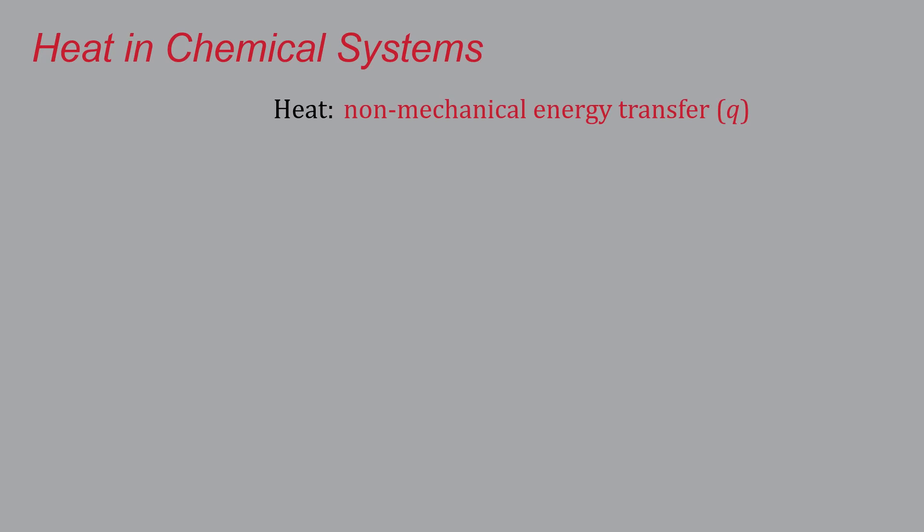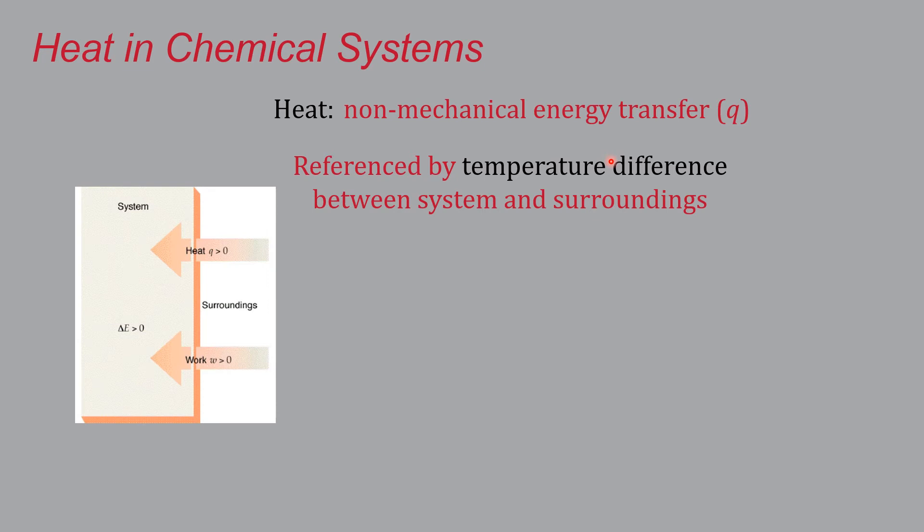So heat in chemical systems, let's get the physics definition out of the way. Heat is referred to as non-mechanical energy transfer. Mechanical energy is organized motion. Heat is disorganized motion on the molecular scale. Now, we don't measure heat directly. It is referenced by temperature difference. So in everyday English, heat and temperature are often used interchangeably. In science, they are not. They are related, but they are not the same thing. Heat is a form of energy, has units of joules. It is often denoted by a lowercase q, but we determine its transfer by temperature changes. Because it's easy because, you know, thermometers.